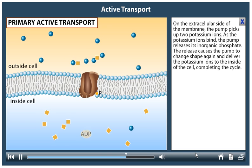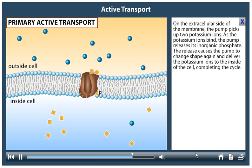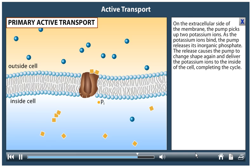On the extracellular side of the membrane, the pump picks up two potassium ions. As the potassium ions bind, the pump releases its inorganic phosphate.